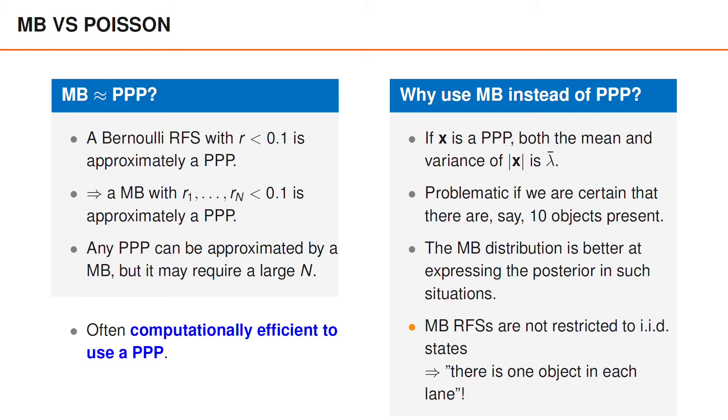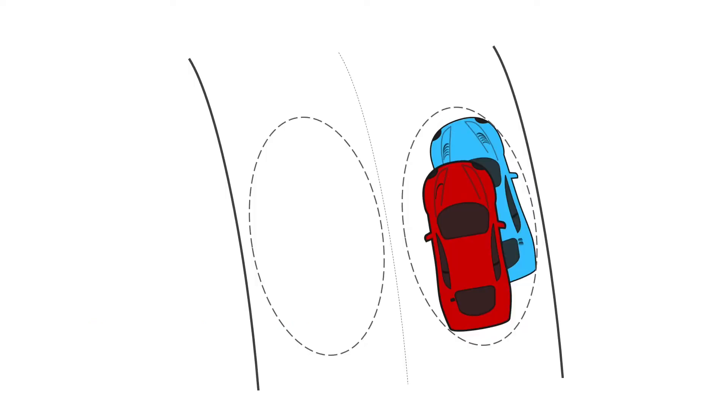Another potential advantage with multi-Bernoulli processes is what we mentioned on the previous slide, namely that the elements in a multi-Bernoulli process are independent, but they do not have to be identically distributed. As an example, you can imagine that your measurements have told you that there is one object in the left lane and one object in the right lane. Using a multi-Bernoulli process, we can easily represent this information by having one Bernoulli component for each lane.